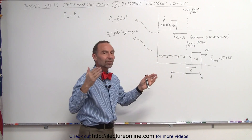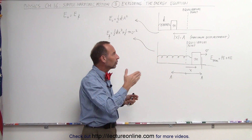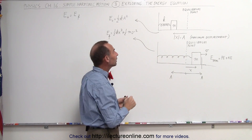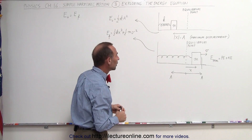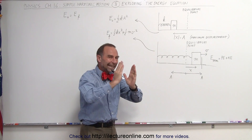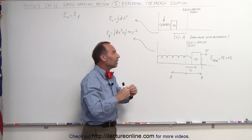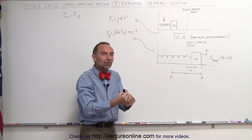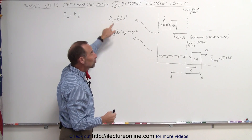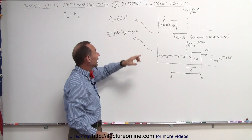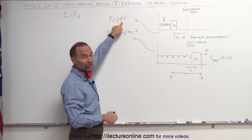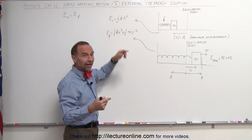Those are the maximum distances the block will travel away from the equilibrium point. So when we compress the block against the spring, we'll have stored energy in the block, and that energy stored is called the initial energy of the system. That will be one half k times the displacement.